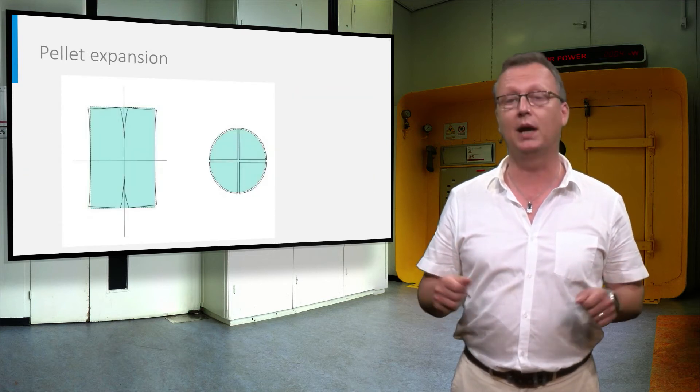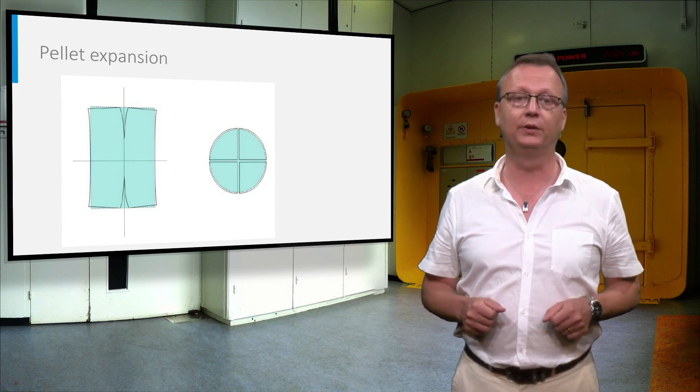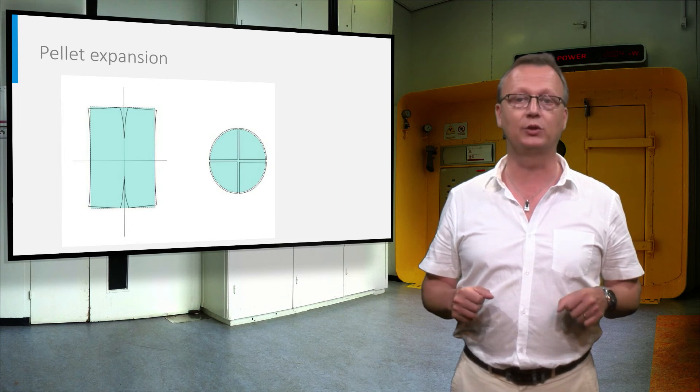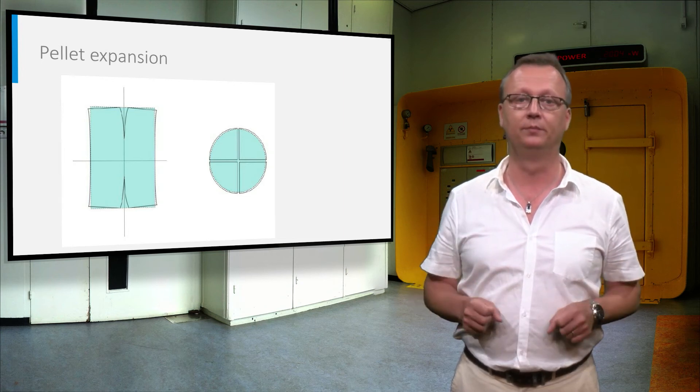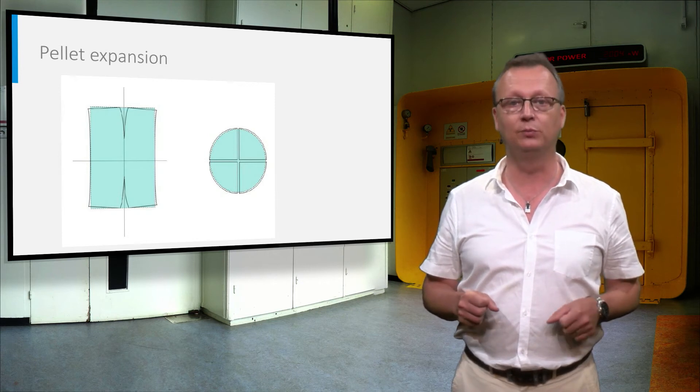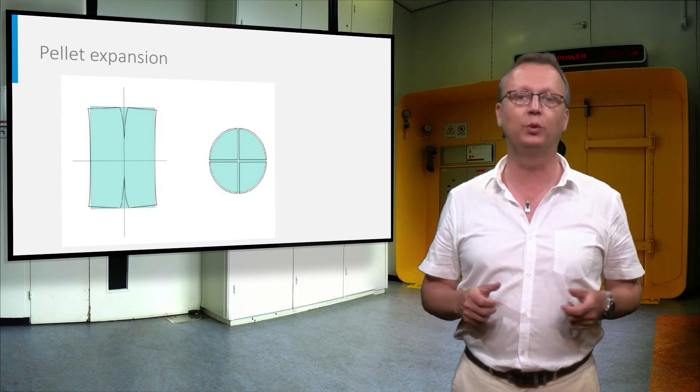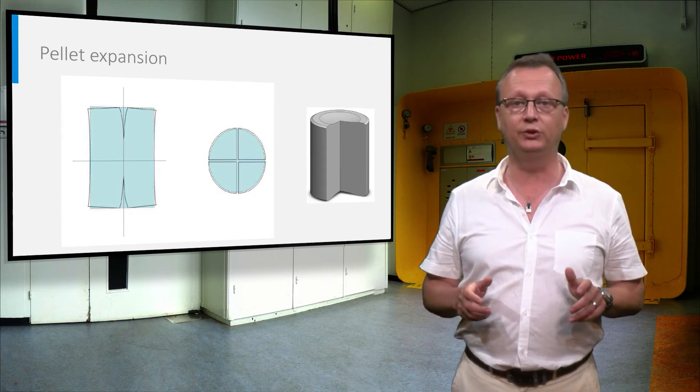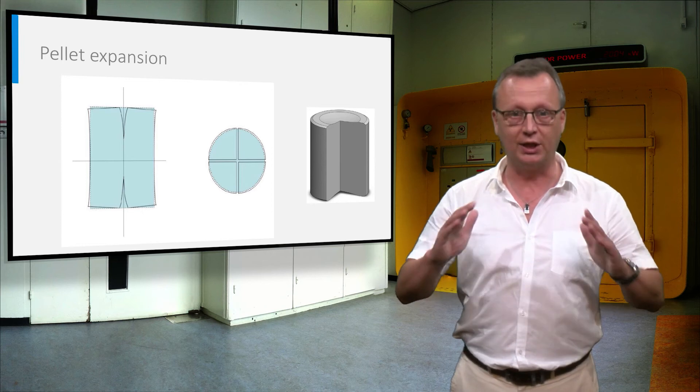Because of this temperature gradient, the pellet has a different thermal expansion across the radius, and as a result of the stress, it starts to deform and fracture. As a result of the deformation, the top and bottom edges move outward and can eventually touch the cladding, leading to local stress. To avoid this, the pellets generally have a dish and a chamfer.